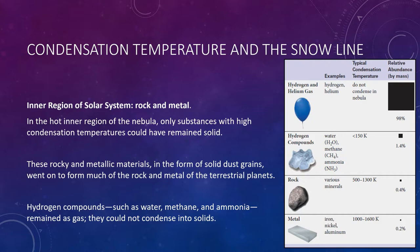This is really important. You can see these different compounds and the temperatures at which they condense: 150 degrees Kelvin is about negative 190 Fahrenheit; 500 to 1,300 Kelvin is 440 to 1,880 Fahrenheit; and 1,000 to 1,600 Kelvin is 1,340 to 2,420 Fahrenheit. Only rocks and metals could remain as solid in the inner solar system.